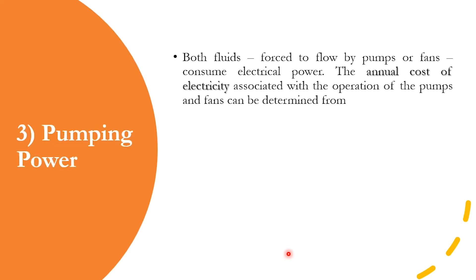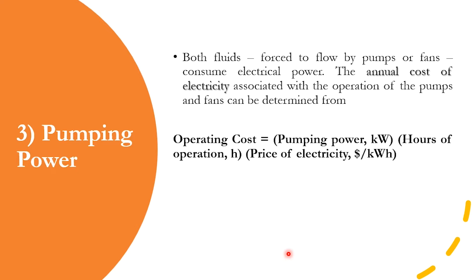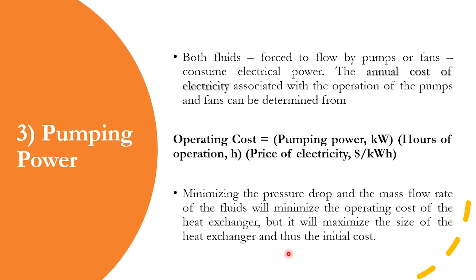The third criterion is pumping power. Both fluids — whether on the shell or tube side — always have to be sent through equipment such as a pump, compressor, or both when gas and liquid are involved. Operating cost is calculated as: pumping power (kW) × operational hours (h) × price of electricity ($/kWh), which gives the total annual operational cost.